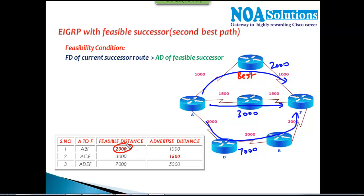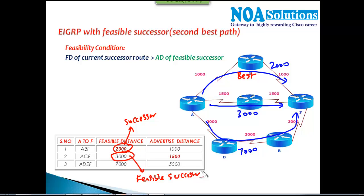In this scenario, the route with cost 2000 is the best route, called the successor. The route with cost 3000 is the second best route, called the feasible successor. So in this scenario, we do have a second best route pre-calculated by EIGRP.